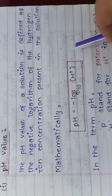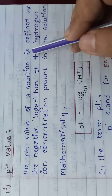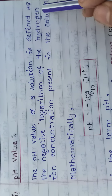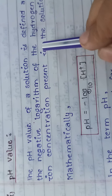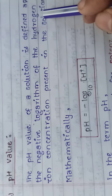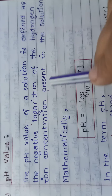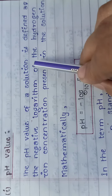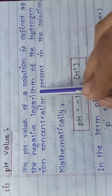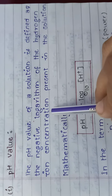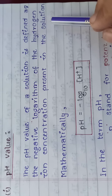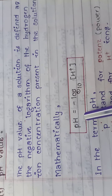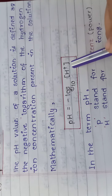The pH value of a solution is defined as the negative logarithm of the hydrogen ion concentration present in the solution. Mathematically, we can write it as: pH = −log₁₀[H⁺].